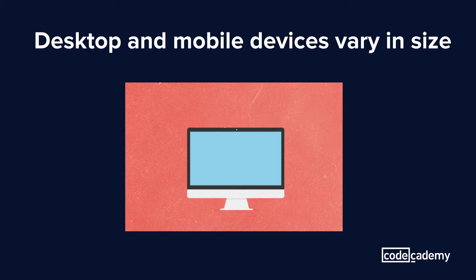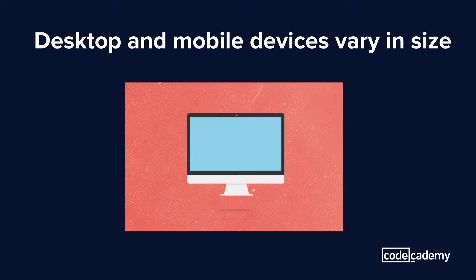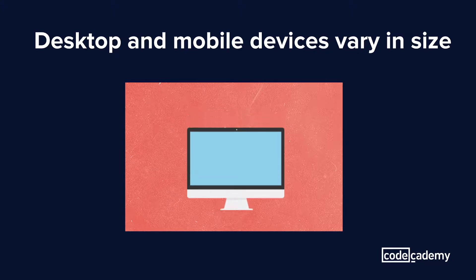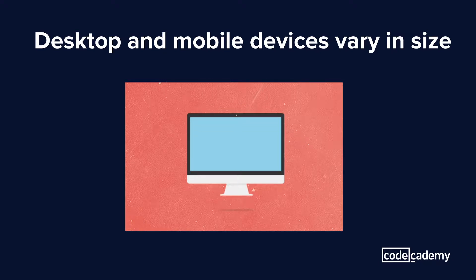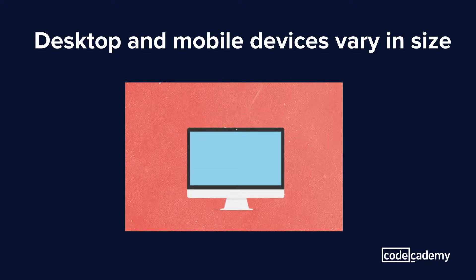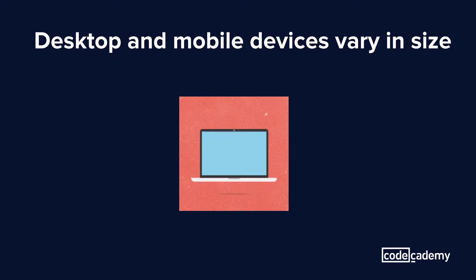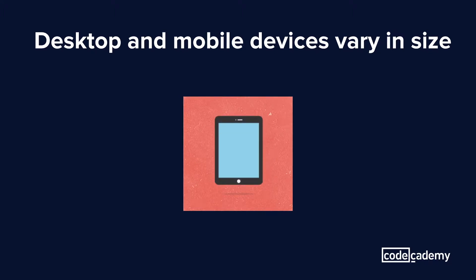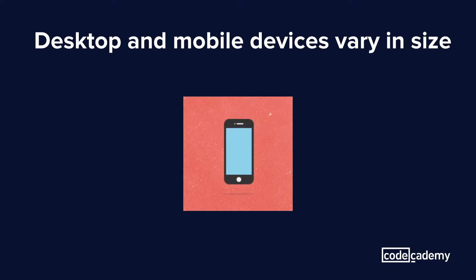When building applications on desktop devices, designers have a lot more freedom since they have more real estate to work with. Desktops could look something like 1440 by 900 or 1024 by 768. On the other hand, mobile devices are generally much smaller, so they could be as small as 360 by 640 or as large as 1366 by 1024.